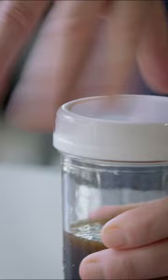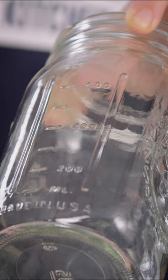Ball jars also have the measurements on the outside, so you can build whatever recipe you're making right in there. The lid screws on really tightly, so you can shake in here easily.